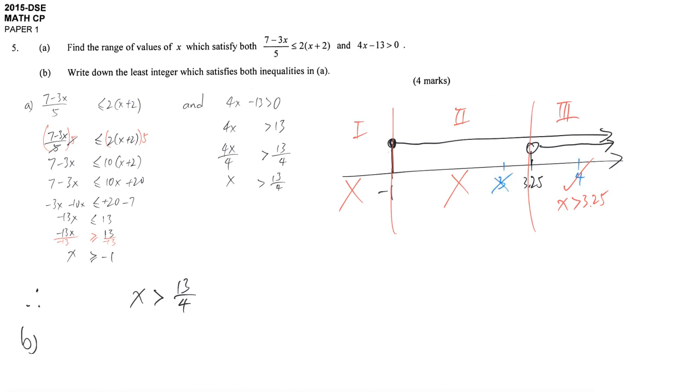So 3 is not acceptable because it's in region 2. The least, most left hand side integer—that means whole number—that fulfills the requirement is 4. So we simply write down the integer is 4.